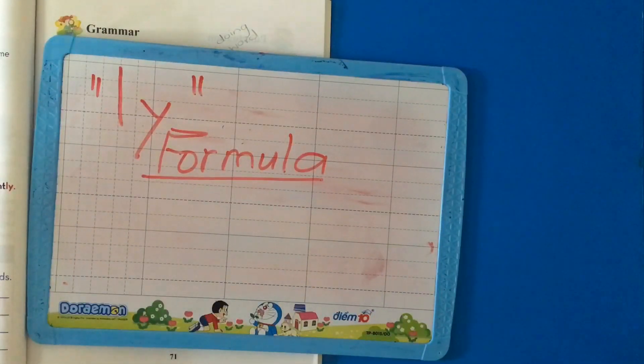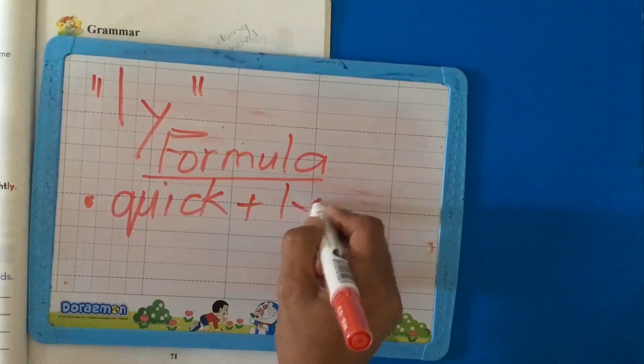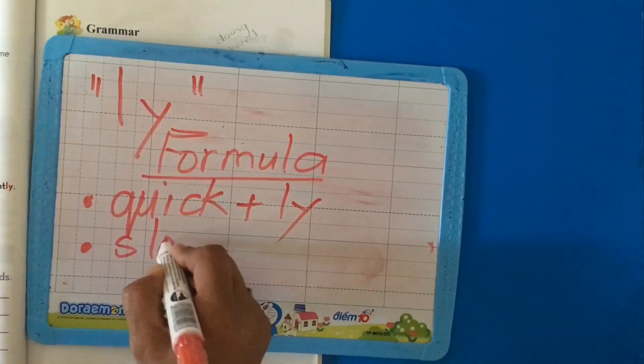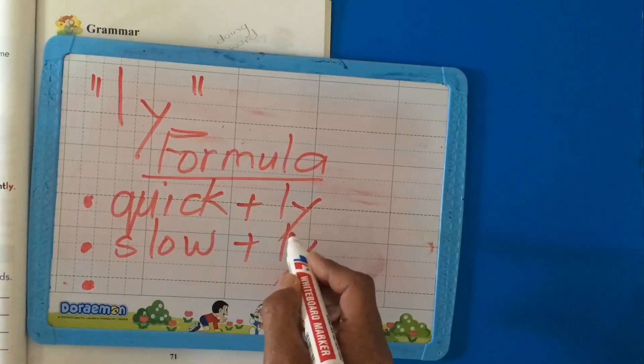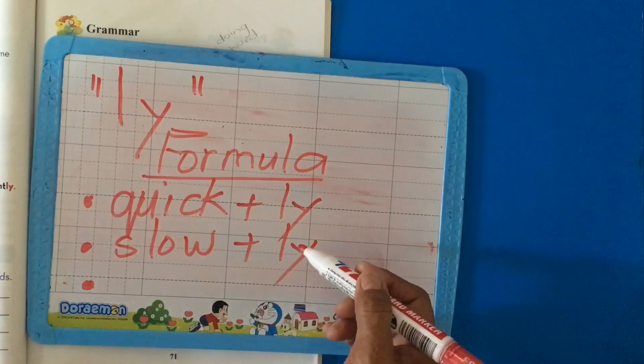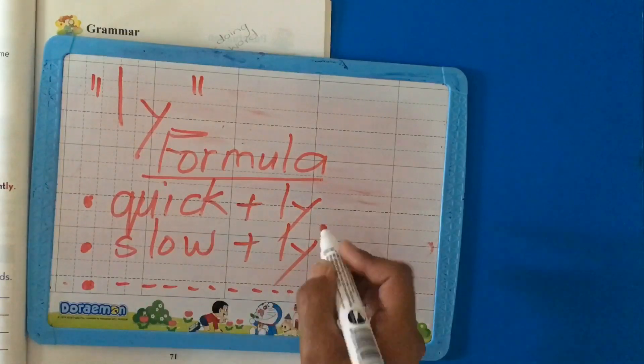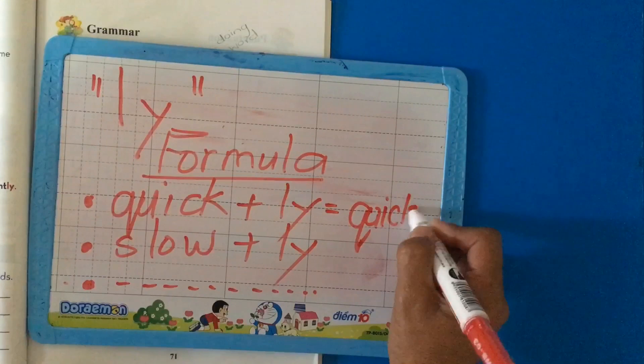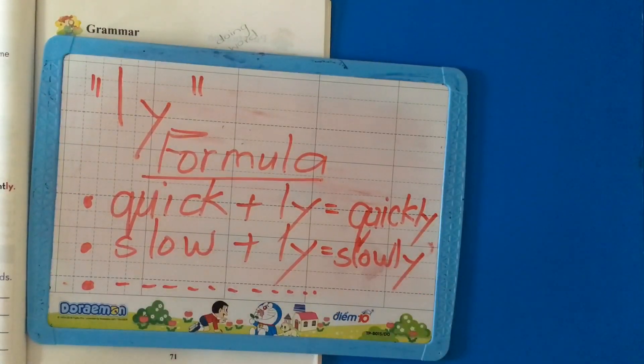How do we write? Let's take quick plus Y. Let's take slow plus Y. Quickly, slowly, and let's think of another one. Can you come up with another one? So I leave you to come up with another one. Remember, the formula is adjective plus Y, quickly, slowly.